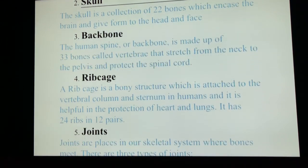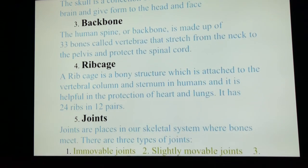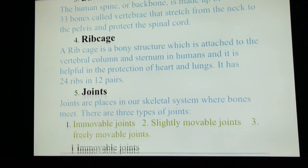Let's move to the fourth question: ribcage. A ribcage is a bony structure which is attached to the vertebral column and sternum in humans, and it is helpful in the protection of the heart and lungs. As you can see, every part of this is playing a major role.